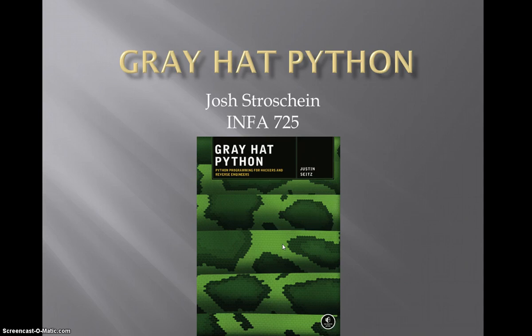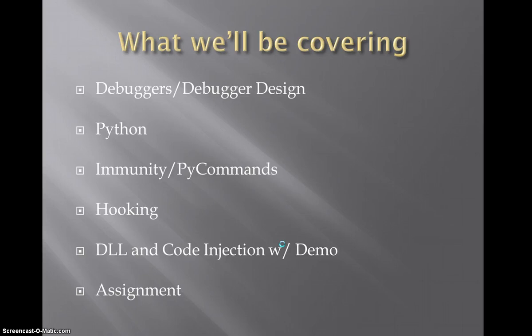Hello, my name is Josh Storschein and I'll be talking to you today about Grey Hat Python. The book I'll be basing this presentation on is the Grey Hat Python book, Programming for Hackers and Reverse Engineers by Justin Seitz, No Starch Press. What we'll be covering today is a brief introduction and overview of debuggers and common debugger design, and a look at some Python code examples to start familiarizing the syntax and structure of the language.